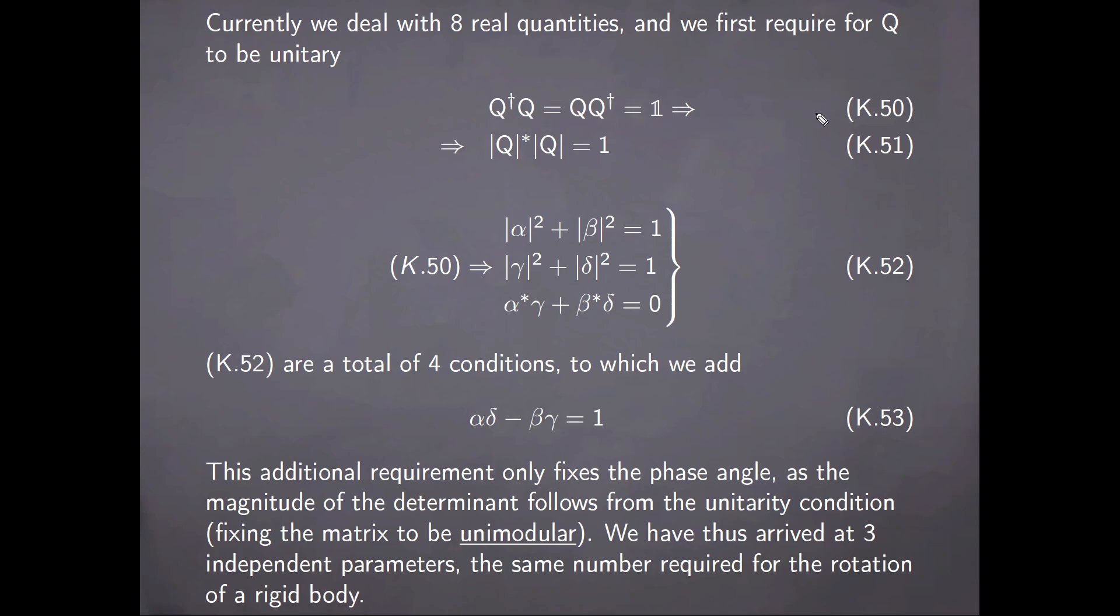Written explicitly, equation 50 expands into the set of conditions here, which are in fact four, given the fact that this one involves complex numbers. So both the real and imaginary part of the left-hand side have to separately be equal to zero. These are four conditions to which we add a fifth one, which follows from the unitary condition and the restriction on the value of the determinant. But this additional requirement only fixes the phase angle, as the magnitude of the determinant itself follows from the unitary condition. So this fixes the matrix to be unimodular.